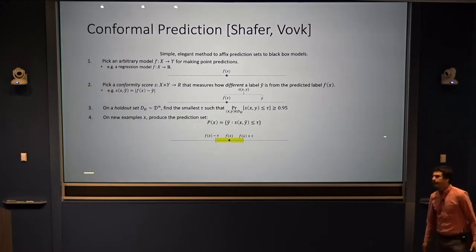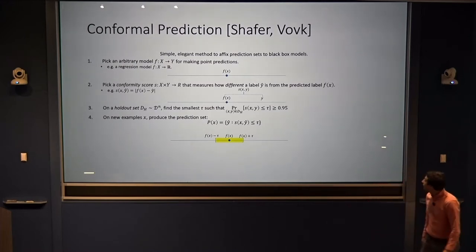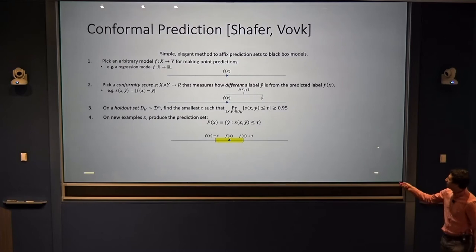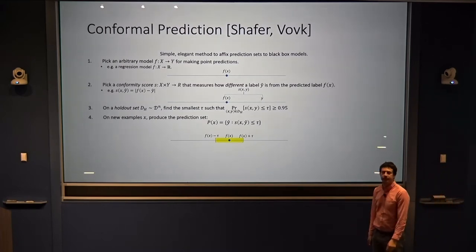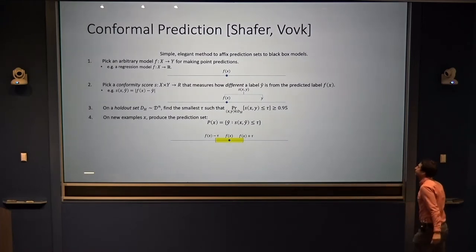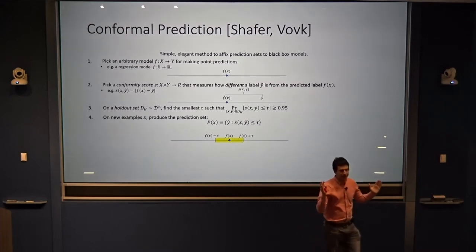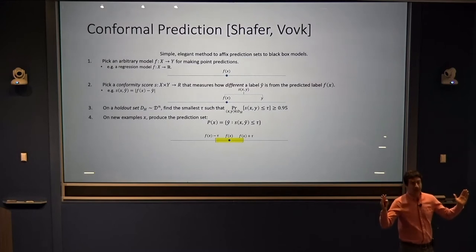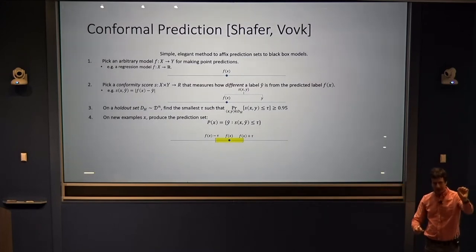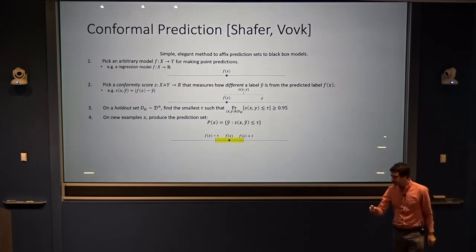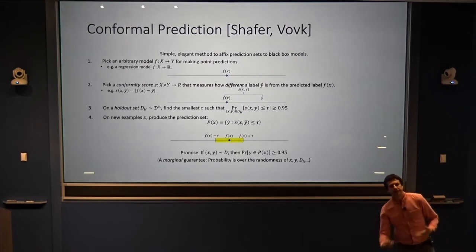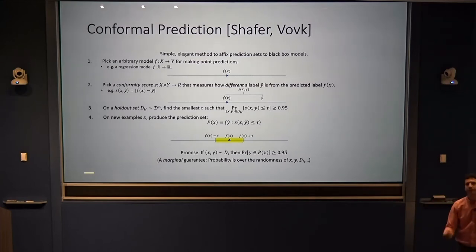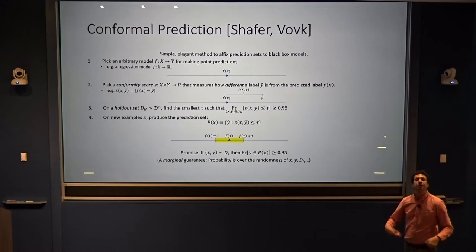I take that threshold and run with it. For a new example — a new patient — I look at what my model predicts, compute the conformity score, and the prediction set I output is the set of all labels with conformity score less than this threshold. In our simple running example, that corresponds to finding some threshold tau such that on our holdout set a prediction interval of width tau covers the true label 95% of the time. On a new example, centered at my point prediction, I predict an interval of width tau. The promise is that prediction sets produced this way — at least if all data was sampled IID — really do cover a new label 95% of the time.